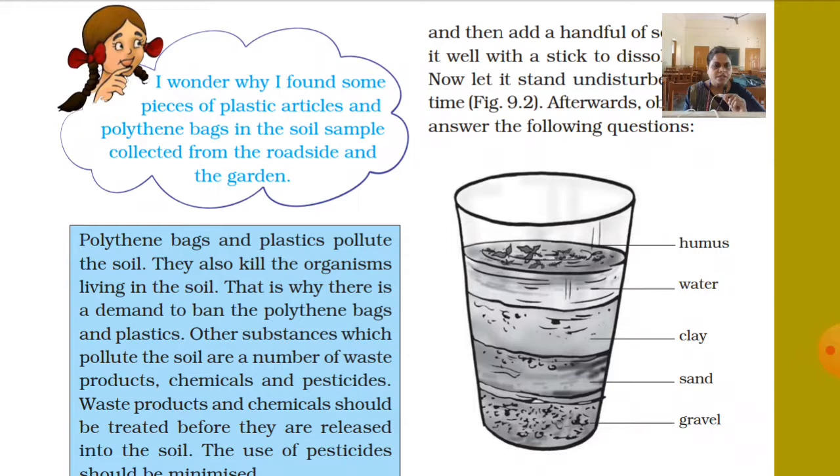So in this way, soil forms in layers. First at the bottom, because they are heavier, they settle down due to gravitational force - these are called gravel. Above that are slightly finer particles, smaller in size - sand particles. Even finer than sand particles is clay. These three layers form in this way, and above them comes water, and above water is humus.